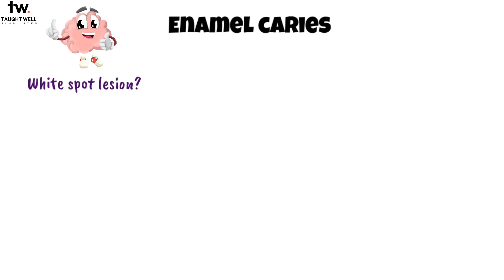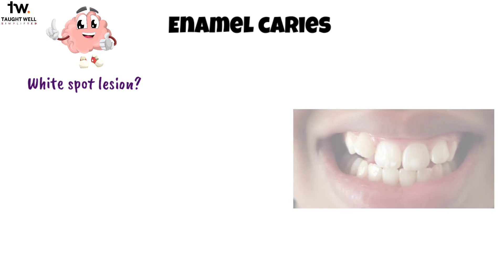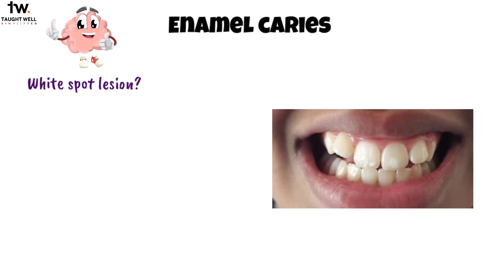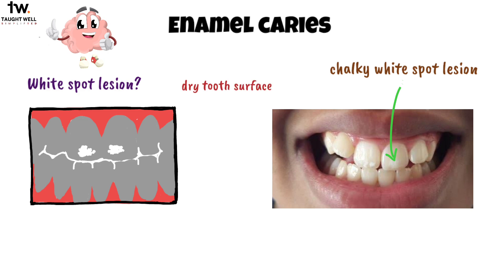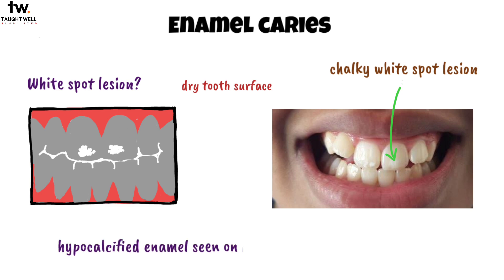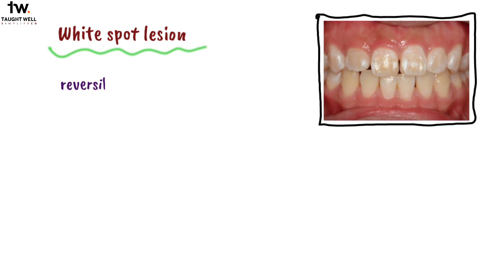An incipient lesion or white spot lesion is the first clinical evidence of caries in enamel. It appears as a chalky white opaque area on the tooth surface, seen when the tooth is dry and seeming to disappear when wet. This is an important distinction from hypocalcified enamel, which is visible both when dry and wet and does not require treatment unless there are aesthetic concerns. The white spot lesion is characterized as reversible; the enamel surface is fairly hard, intact, and smooth to the touch.